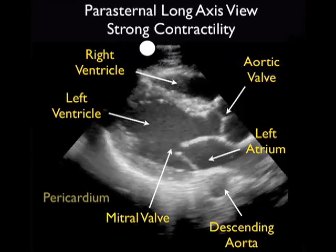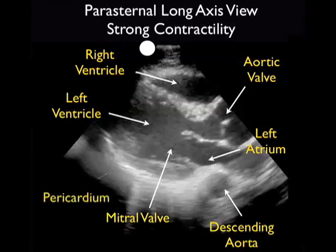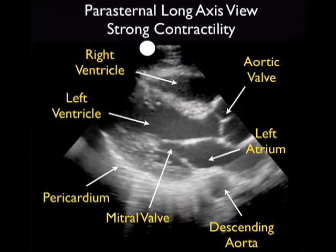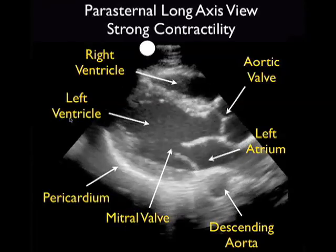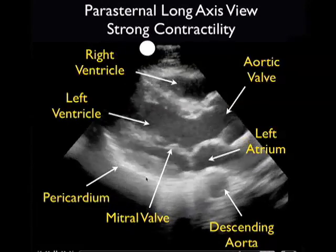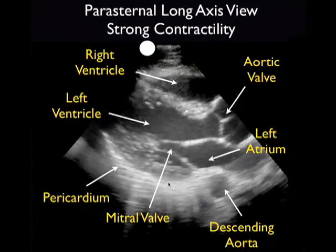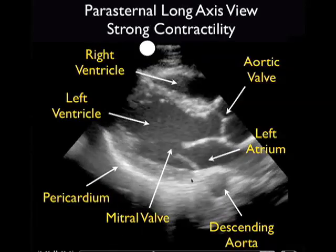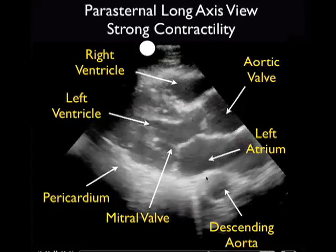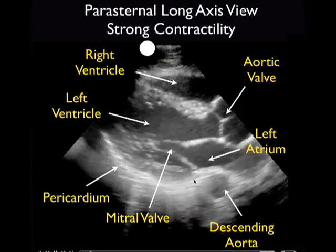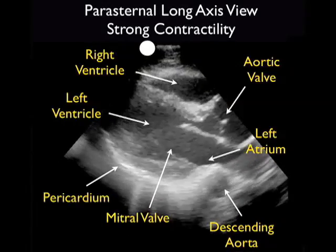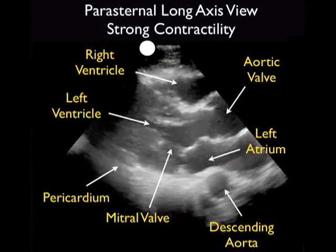Recall the descending aorta — the cylinder cut in cross-section just posterior to the left atrium. Note the posterior pericardial reflection coming off just anterior to the descending aorta and posterior to the left ventricle. With a small indicator arrow, I'll trace out the posterior pericardial reflection, and note the absence of any dark or anechoic fluid collections.